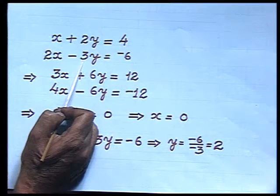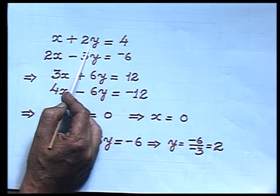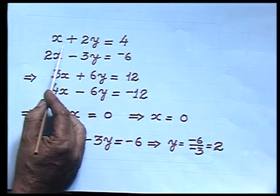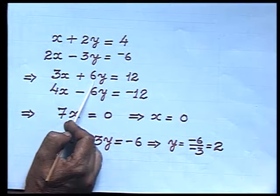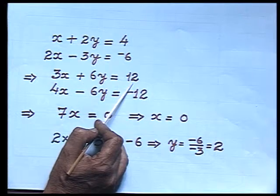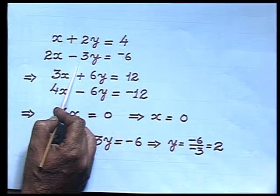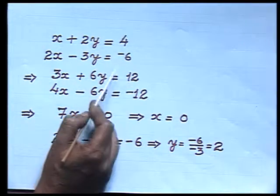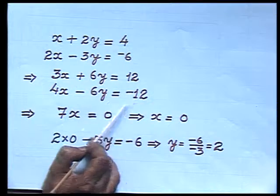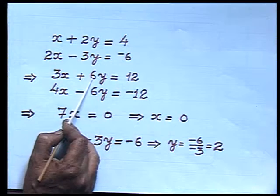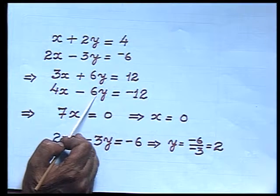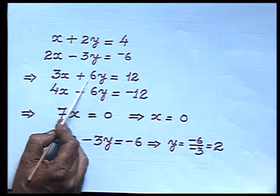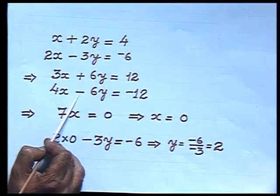So I multiply the first equation by 3 and the second equation by 2. Multiplying the first equation by 3 gives 3x plus 6y equals 12. Multiplying the second equation by 2 gives 4x minus 6y equals minus 12. Now the coefficients of y are both 6 — but the sign in the first is plus and in the second is minus. Since the signs are different, I add them.